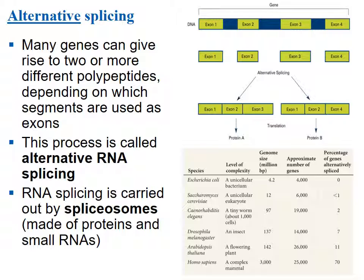For example, a gene with four possible exons could use exons 1, 2, and 3 to produce protein A, or exons 1, 2, and 4 to produce protein B. E. coli has approximately 4,000 genes and none are alternatively spliced. Yeast (Saccharomyces cerevisiae) alternatively splices less than 1% of its genes. Humans (Homo sapiens) have about 25,000 genes and roughly 70% are alternatively spliced, giving us a huge number of possible proteins. Ribozymes are RNA molecules that function as enzymes — catalysts. In some organisms, RNA splicing can happen without proteins; introns can catalyze their own splicing.